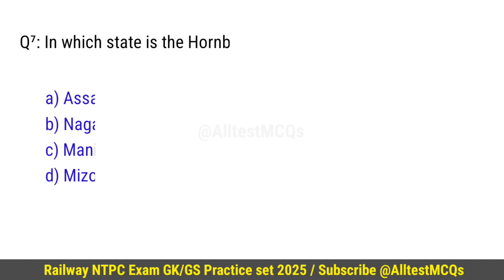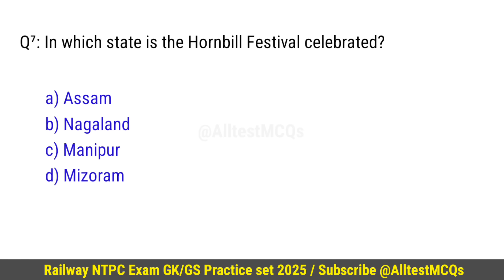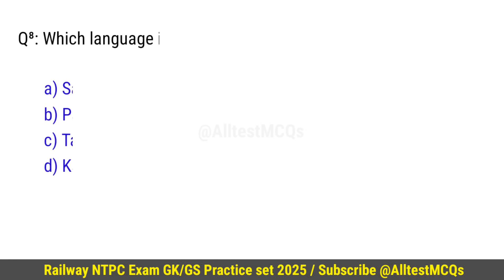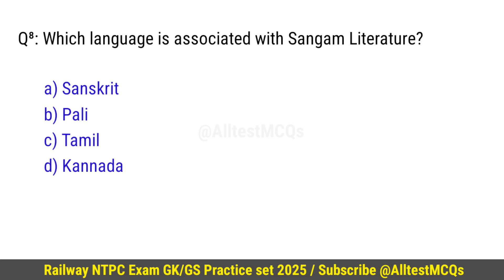Question number 7: In which state is the Hornbill festival celebrated? Correct option is B — Nagaland. Question number 8: Which language is associated with Sangam literature? Right option is C — Tamil.